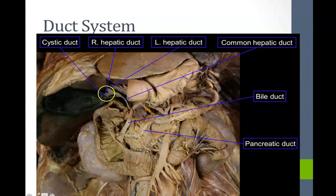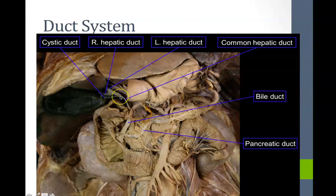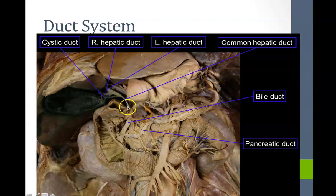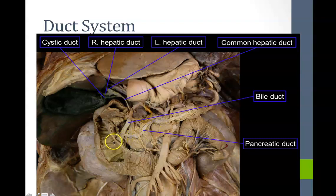In the cadaver, the right and left hepatic ducts drain the liver and become the common hepatic duct. The cystic duct drains the gallbladder and when it joins the common hepatic duct, it becomes the common bile duct. The common bile duct then merges with the main pancreatic duct, leading to the major duodenal papilla.